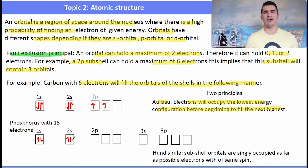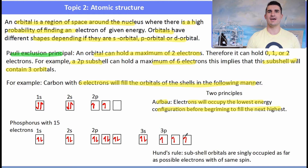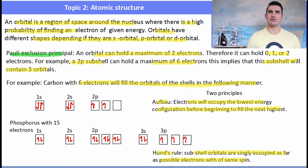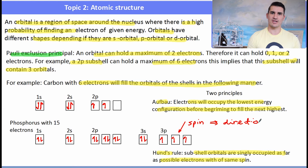Phosphorus has 15 electrons: a full 1s, full 2s, full 2p (six electrons), and a full 3s. In the 3p subshell, electrons remain unpaired until there are more than three, since there are only three orbitals in a p subshell. Electrons remain unpaired until we have more than three electrons in that p subshell.